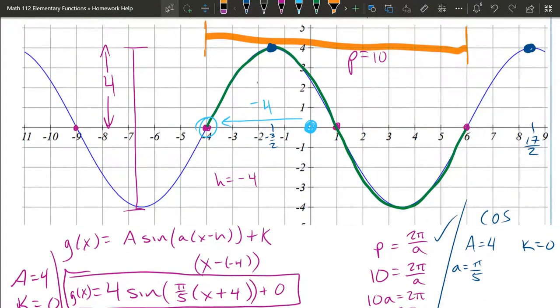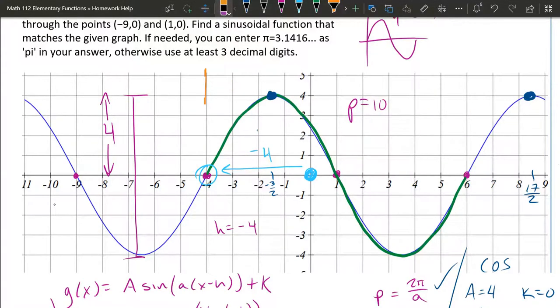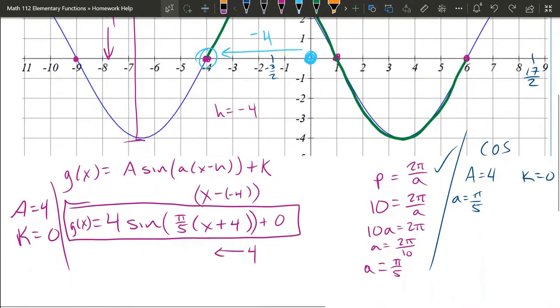Now, how does this horizontally shift differently? Well, the original cosine would have started right over here. Of course, our cosine moved to the left, 3 halves. So our h is negative 3 halves.